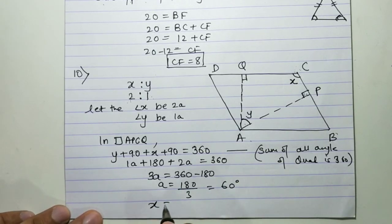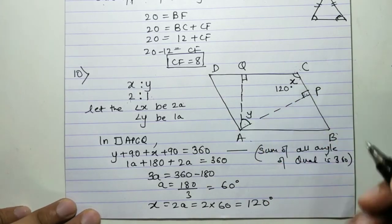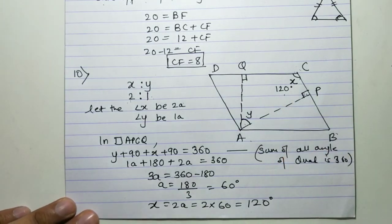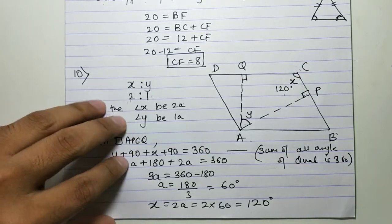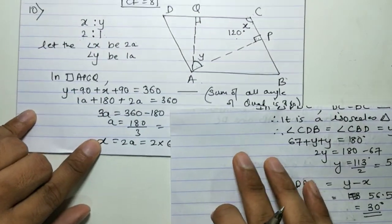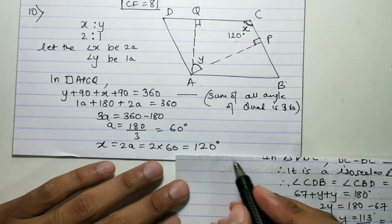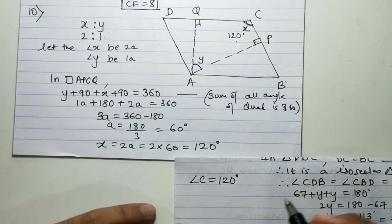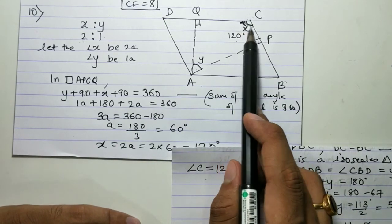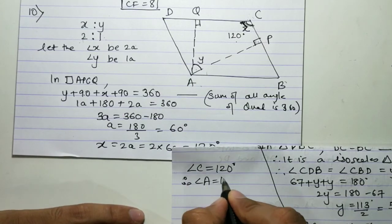Since a = 60°, x = 2a = 120°. So angle C = 120 degrees. Since opposite angles of a parallelogram are equal, angle A = 120 degrees as well.